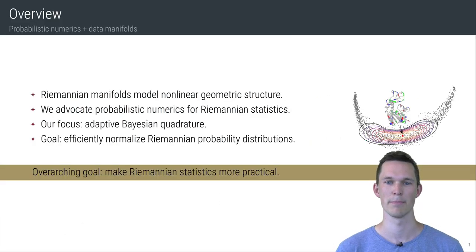To give you a short overview of the paper, we begin with the assumption that Riemannian manifolds are a suitable model when data has inherent nonlinear geometric structure. However, the associated operations are computationally rather expensive. Hence we advocate the use of probabilistic numerical methods in Riemannian statistics.